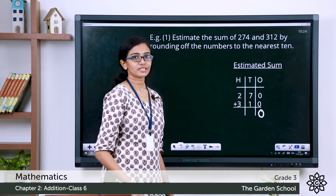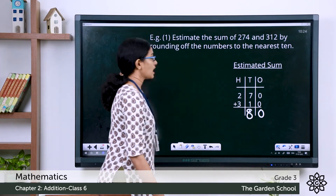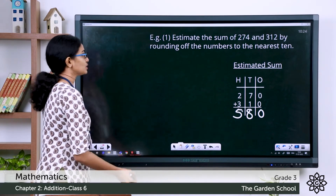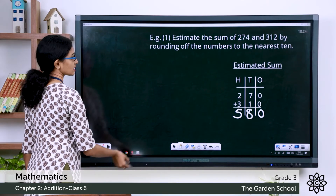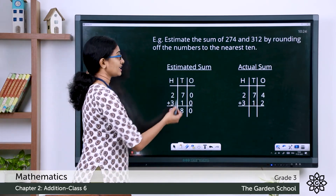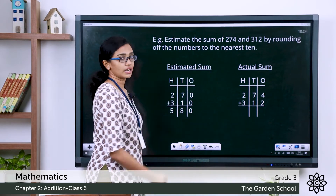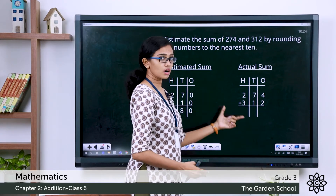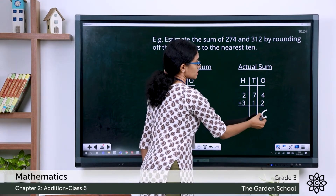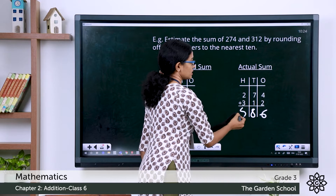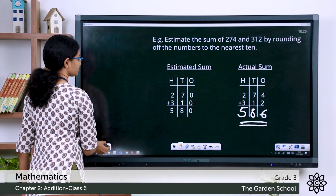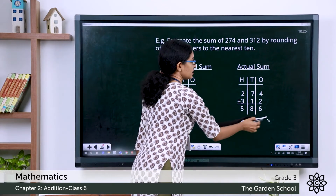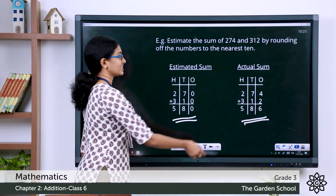Zero ones plus zero ones is zero. Seven tens plus one ten is eight tens. Two hundreds plus three hundreds gives you five hundreds. So the estimated sum is 580. Now the actual sum of 274 plus 312 is: 4 plus 2 is 6, 7 plus 1 is 8, 2 plus 3 is 5 — so the actual sum is 586. In this case, the actual sum is greater than the estimated sum.